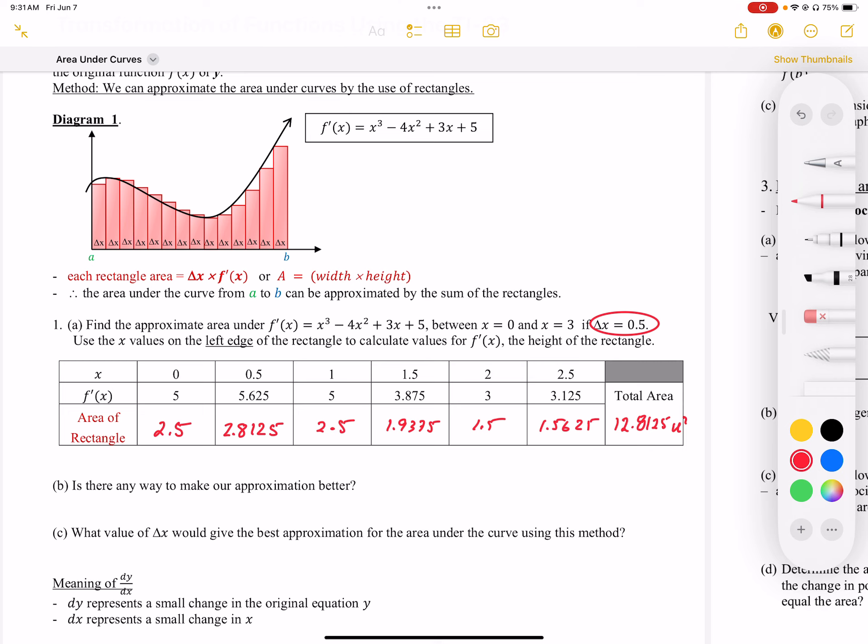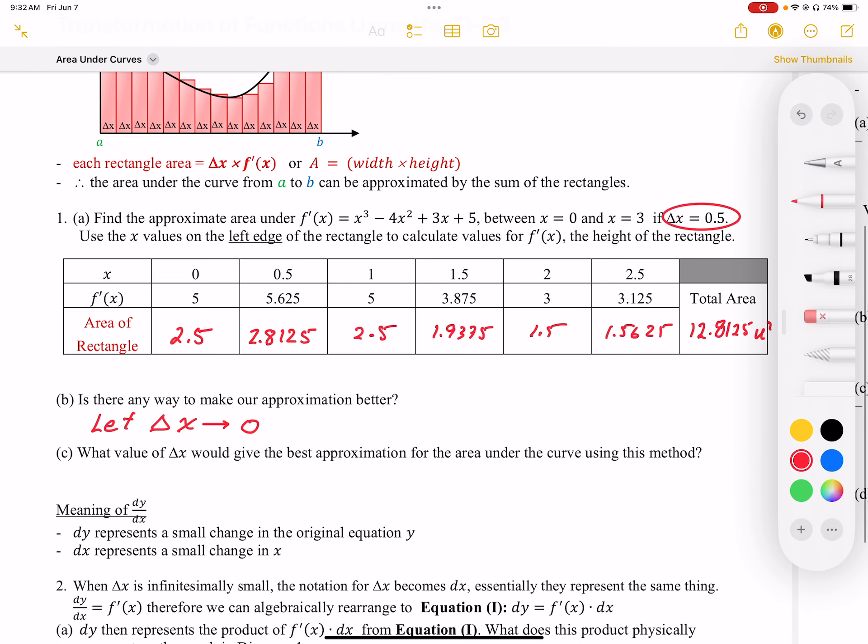How can we make these approximations better? How can we make these rectangles fit better under that curve? We can do that by letting delta x approach 0. The thinner those rectangles are, the better they'll fit that curve. If we let those rectangles essentially go to 0, we could fit the curve perfectly. So the value of delta x that would give the best approximation using this method would be delta x equals 0.